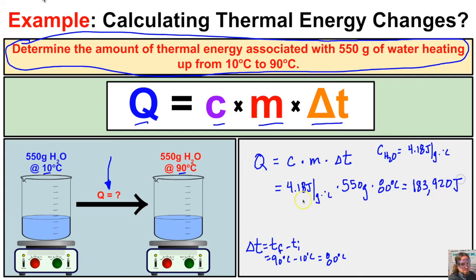Putting this into the calculator gives us 183,920 joules. Grams cancel out, degrees Celsius cancel out, leaving us with joules. Because the sign of Q is positive, this water is going to absorb 183,920 joules of thermal energy. Now let's look at a specific heat capacity table and work through a few more examples.